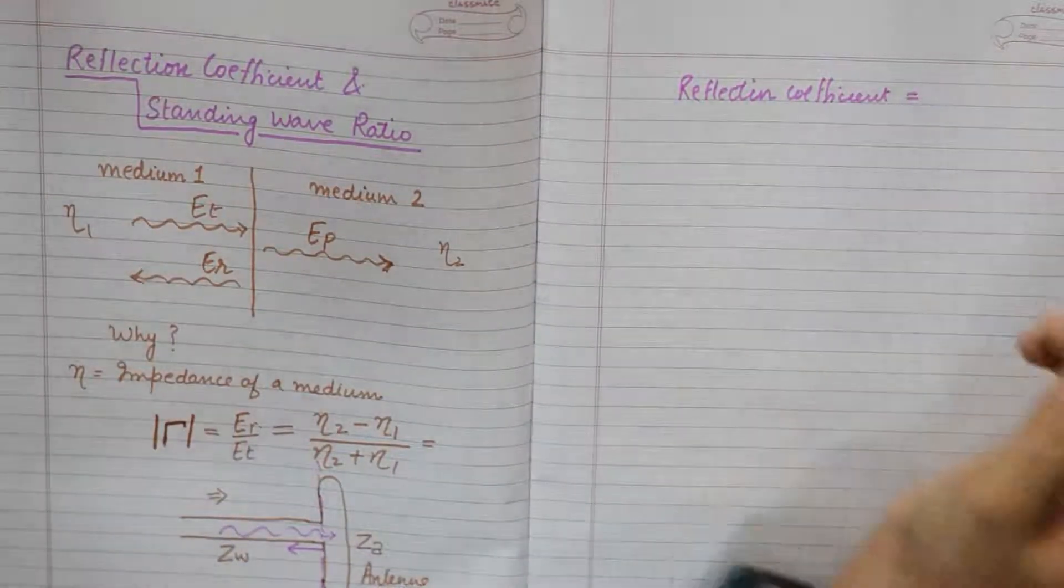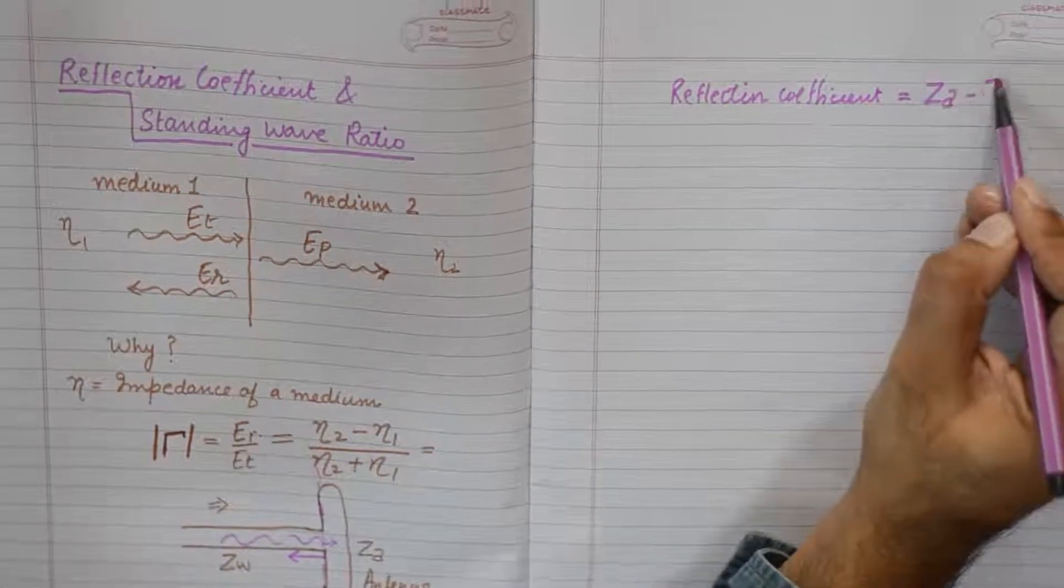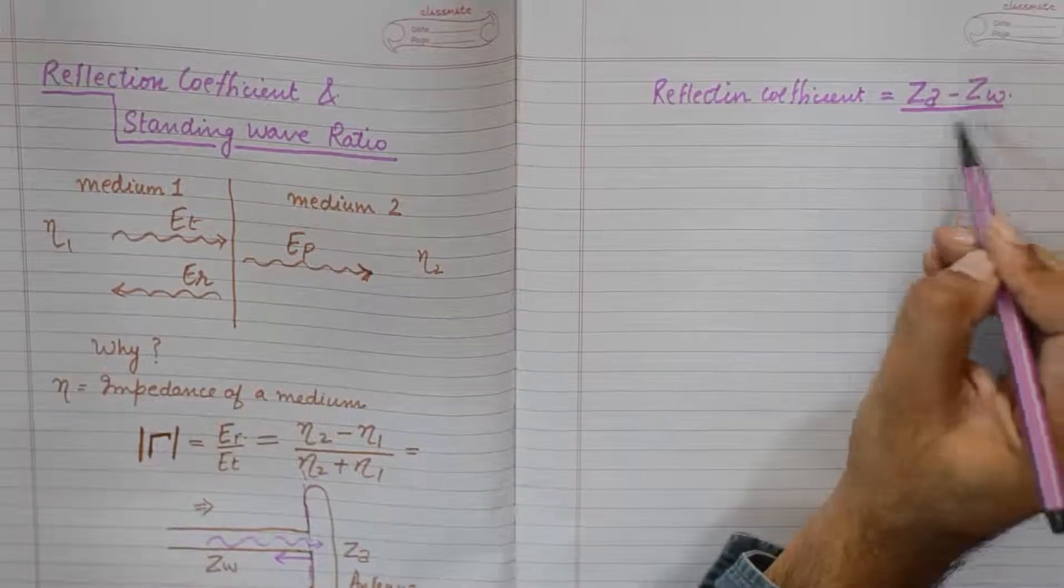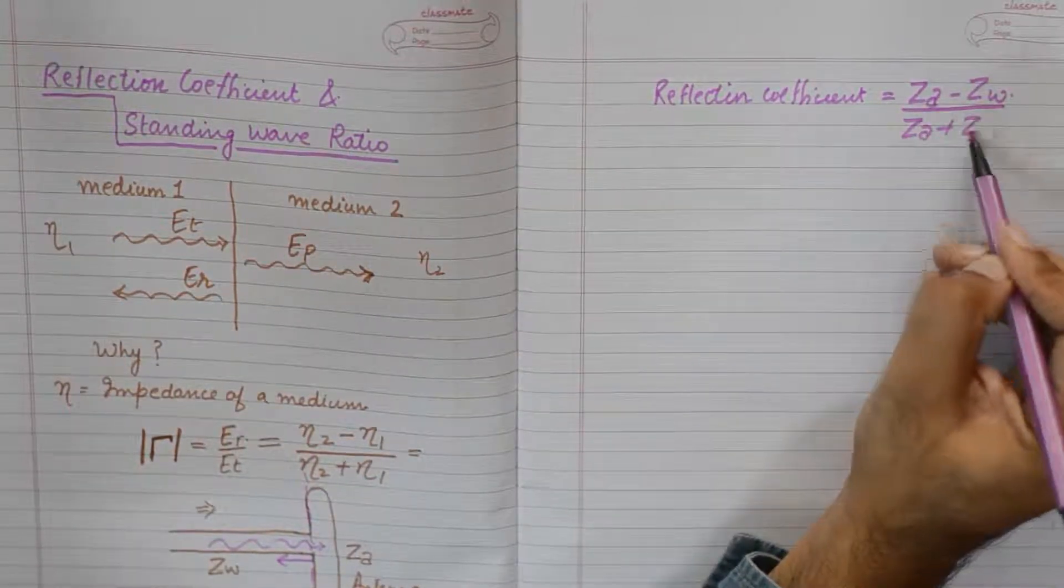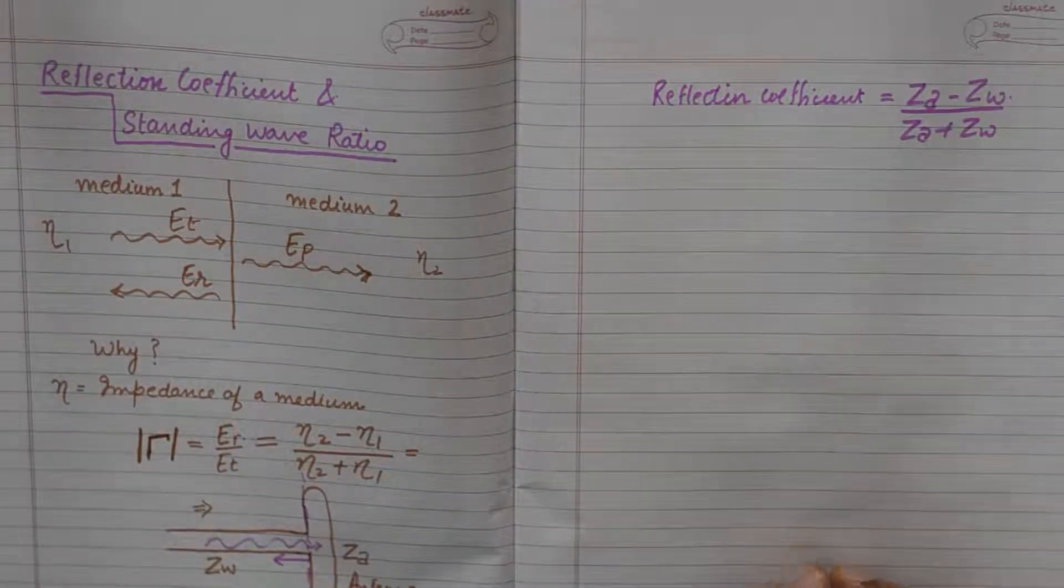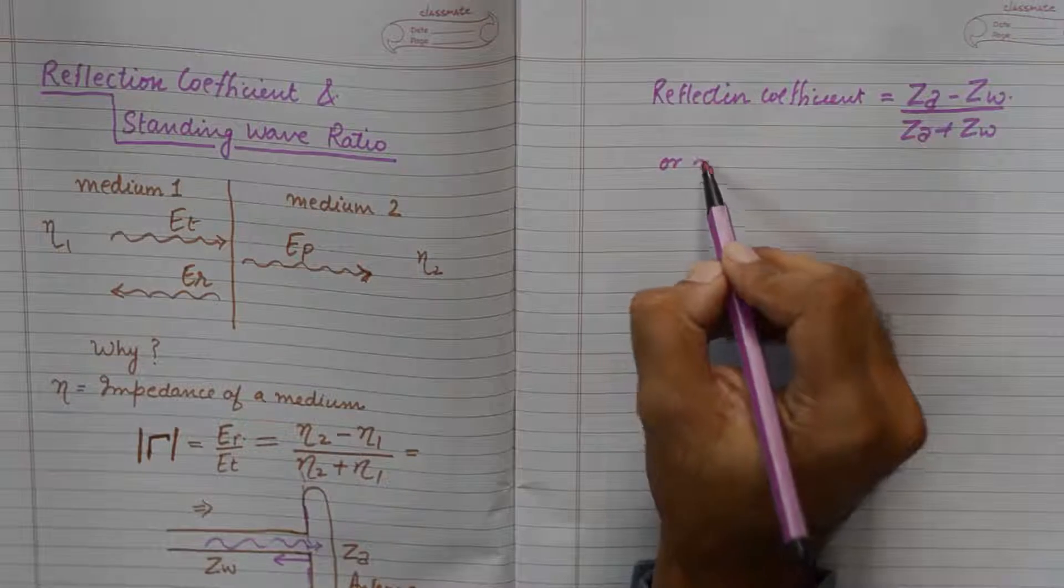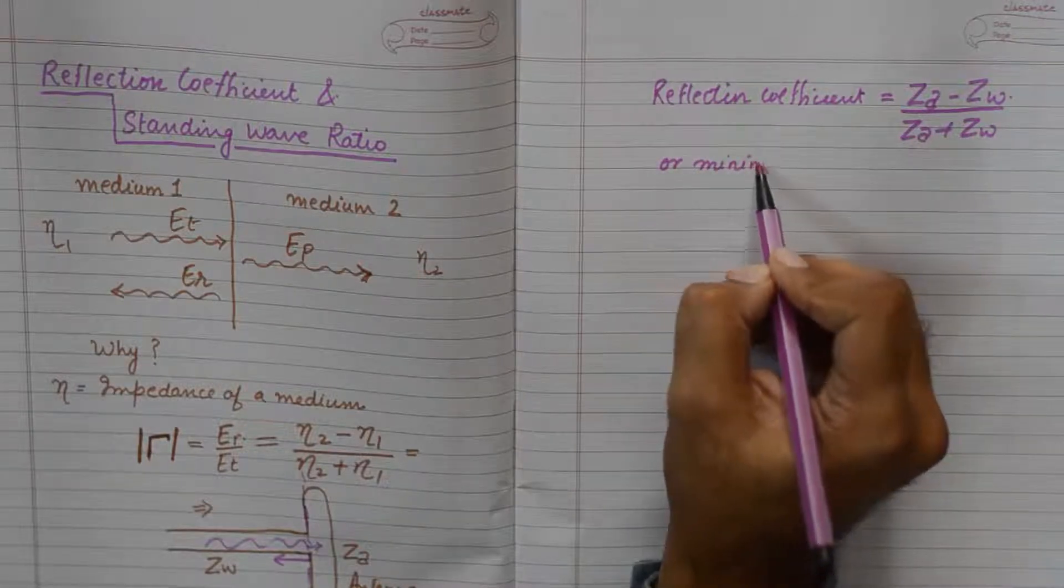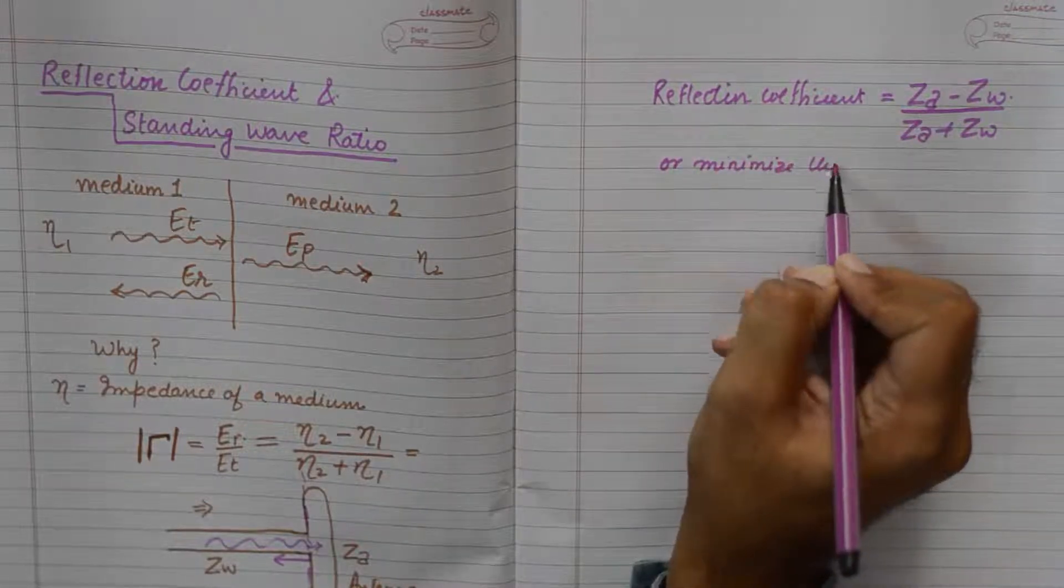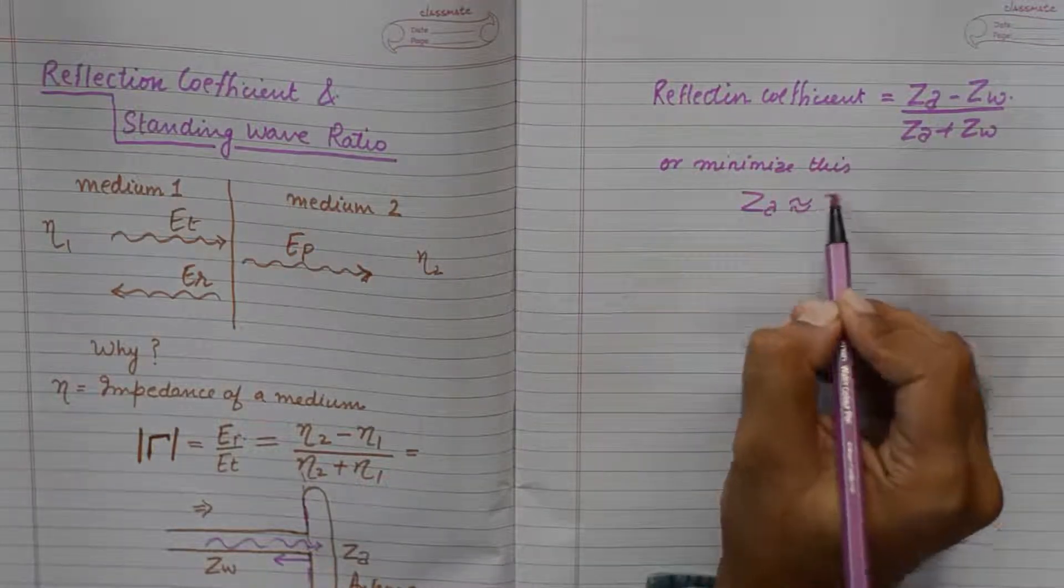And this is calculated by reflection coefficient. And in our case, it should be equivalent to ZA minus ZW upon ZA plus ZW. Now to eliminate this reflection coefficient or to minimize this, we need to keep ZA to be approximately equivalent to ZW.